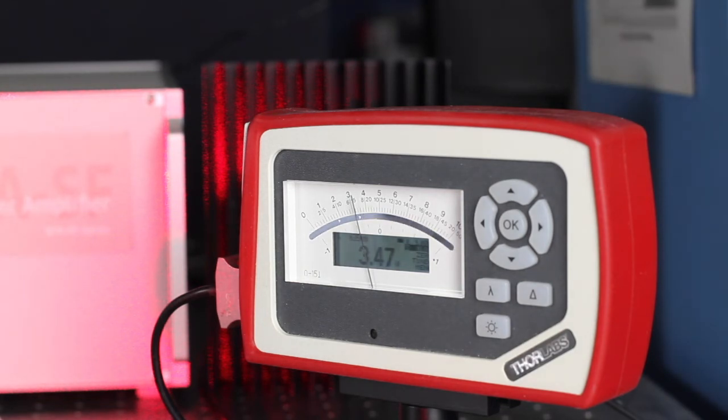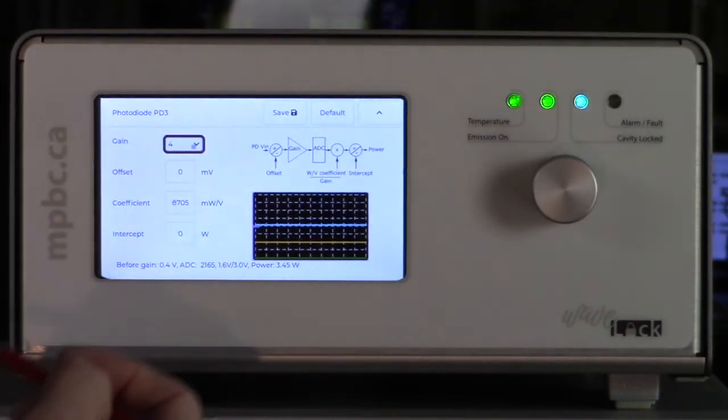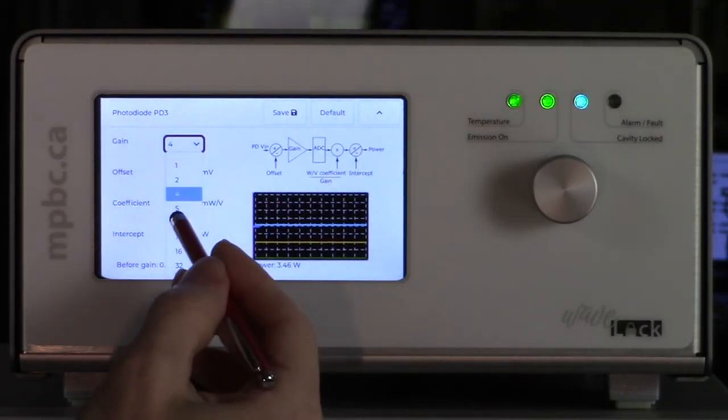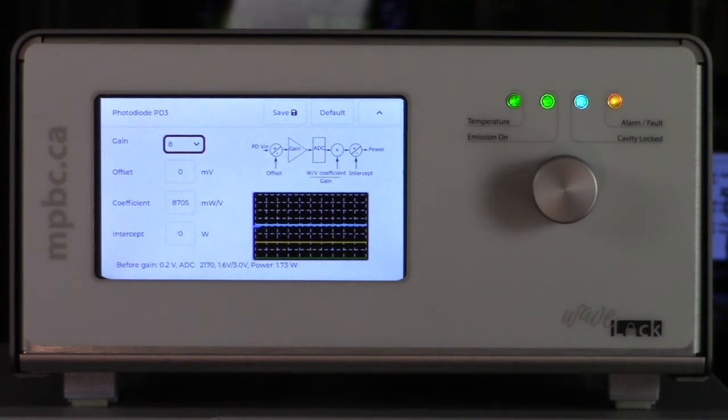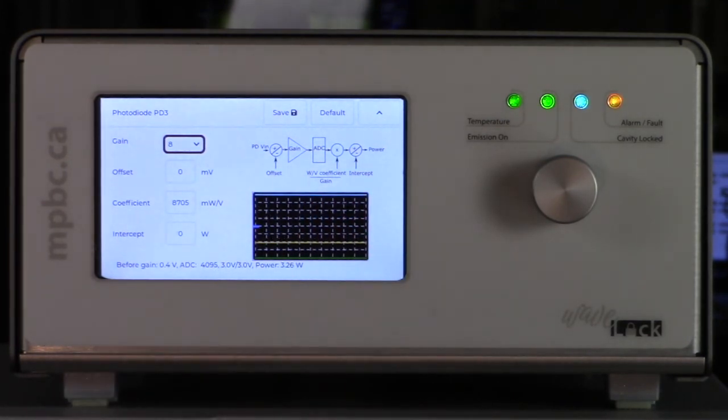Let's see what happens if we made a mistake, if we put too much gain at this input. I raise it to a gain of 8. Look at that. The blue line went to the very top and we get an alarm. That's because we were in over range.